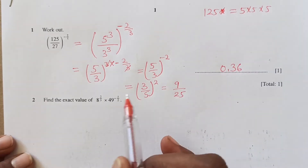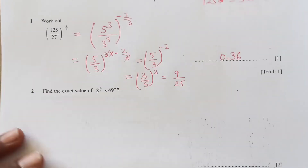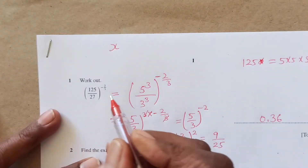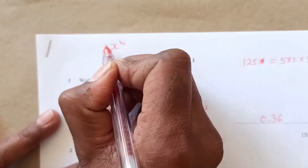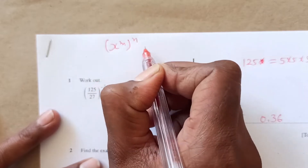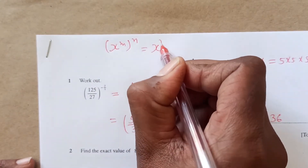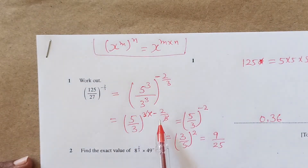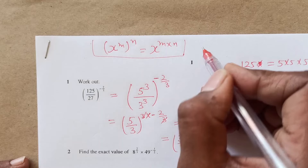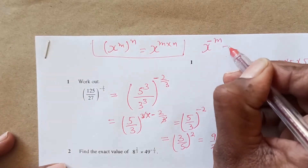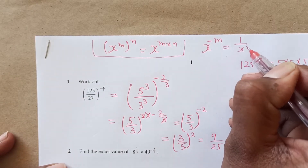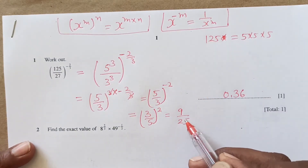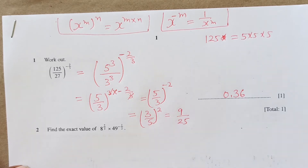Let me explain the exponent rules. The first rule: if you have x^m and outside there is a power n, then you use x^(m×n) — multiply the powers. The second rule: if you have x^(negative m), we write it as 1 over x^m. So a negative exponent means taking the reciprocal — that's what we used here.